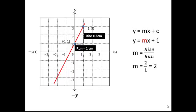which equals 2. Therefore, the gradient of this line equals 2. We can then substitute this value into the equation on the right. This tells us that the equation of this line is y = 2x + 1.